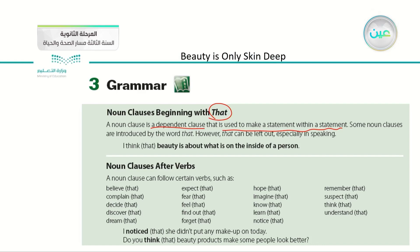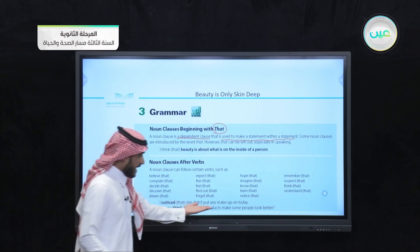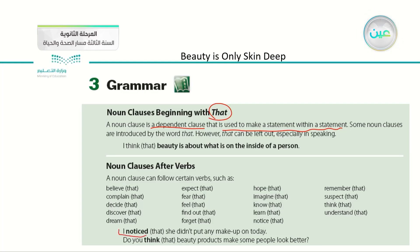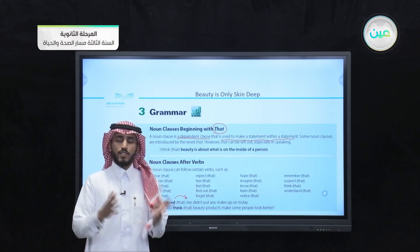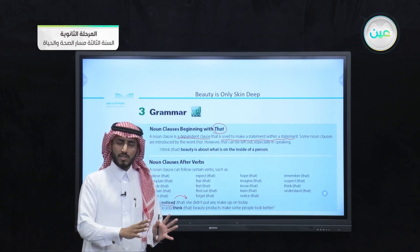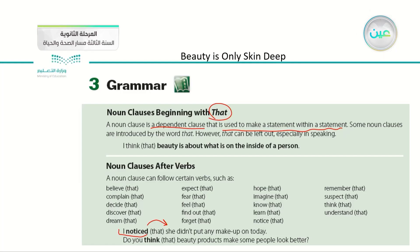The first way is that it comes after the verb. For example: 'I noticed that she didn't put any makeup on today.' Here we have the verb, then the noun clause comes after the verb. The word 'that' is put in brackets, which means we have the option to keep it or leave it out — either way is correct. Usually in speaking, people leave out the word 'that.'